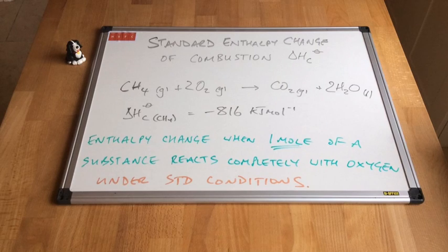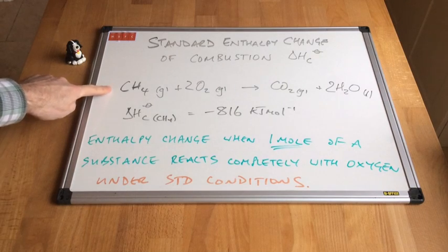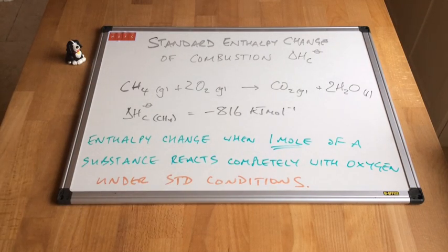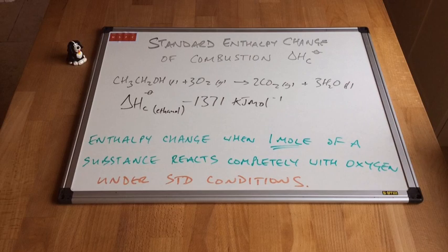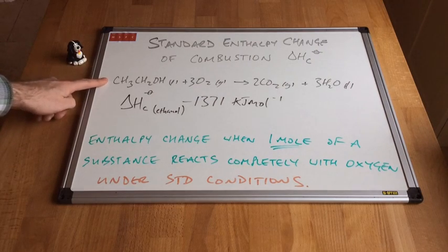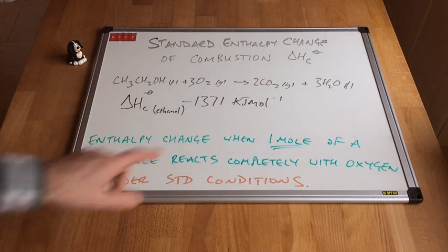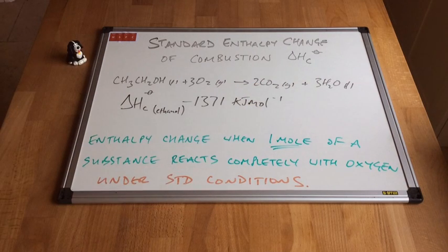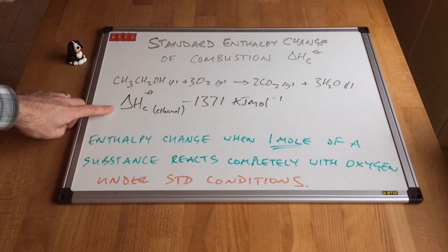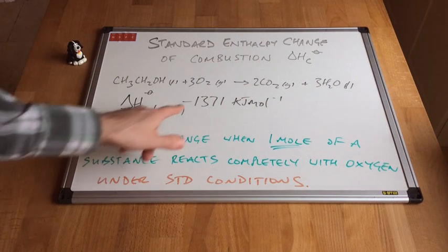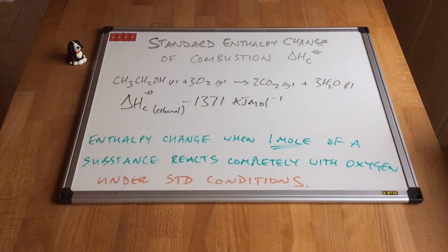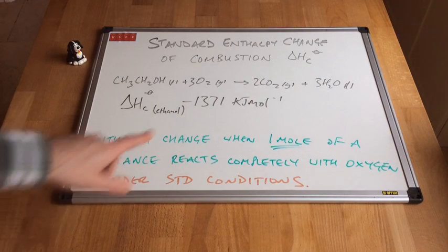The standard enthalpy change of combustion for methane is minus 816 kilojoules per mole. The definition is: the enthalpy change when one mole of a substance reacts completely with oxygen under standard conditions. Another example is ethanol: one mole of ethanol reacting completely with oxygen under standard conditions forms two moles of carbon dioxide and three moles of water, with an enthalpy change of minus 1371 kilojoules per mole — obviously exothermic.